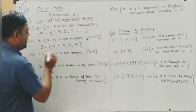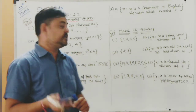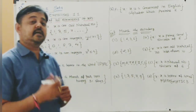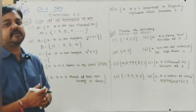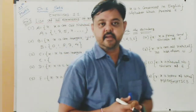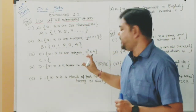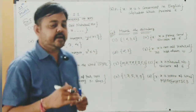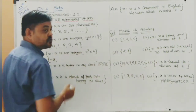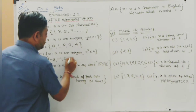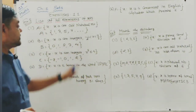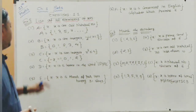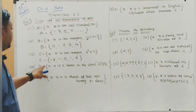Set C = {x : x is an integer and x² ≤ 4}. We need integers whose square is less than or equal to 4. Checking: 1² = 1 ✓, 2² = 4 ✓, 3² = 9 — not included. Considering negative integers: (-1)² = 1, (-2)² = 4. So the elements are: -2, -1, 0, 1, 2.